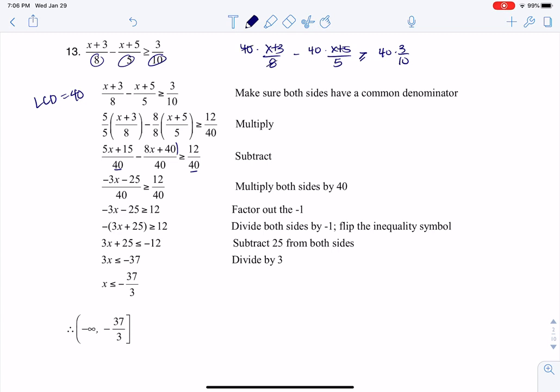So the 8 and the 40 would divide out and give you a 5. So I would have 5 times x plus 3 here. The 40 and the 5 would divide out and leave you with an 8. So I would have minus 8 times x plus 5, right? And then the 40 and the 10 would cancel out and this would be greater than or equal to 12. So you could then solve this inequality and get to the end. But I still want to go through how you could do this keeping the fraction. So let me erase what we have here, although I am going to just rewrite that the LCD here is 40.